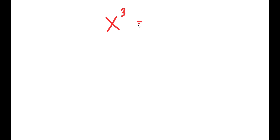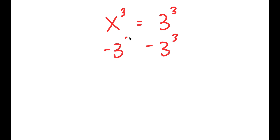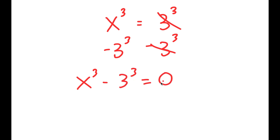In this video, I'm solving the equation x to the power of 3 is equal to 3 to the power of 3. To solve this, I'm going to first start by subtracting 3 to the power of 3 on both sides. So now I get x to the power of 3 minus 3 to the power of 3 is equal to 0.